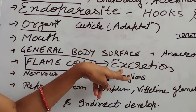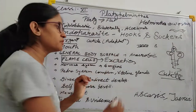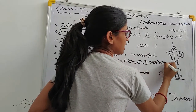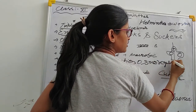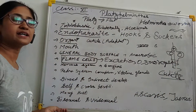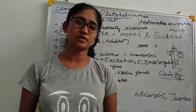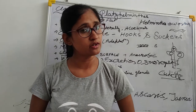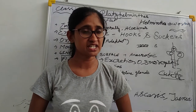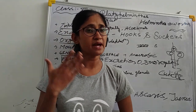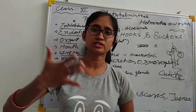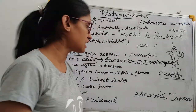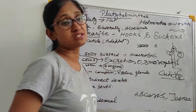Flame cells perform osmoregulation and excretion. Now the nervous system is also developed here — ganglia are present. The nervous system is becoming more complex, with ganglia developed.